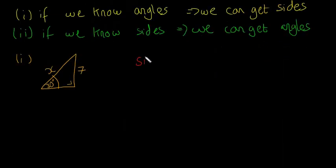I'm going to write sine of A equals opposite over hypotenuse. So sine of 30 equals the opposite, which is 7, over the hypotenuse, which is X.